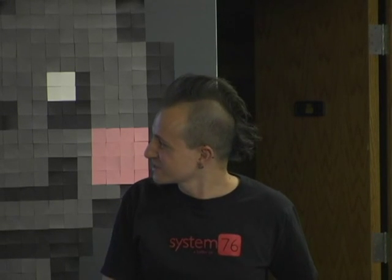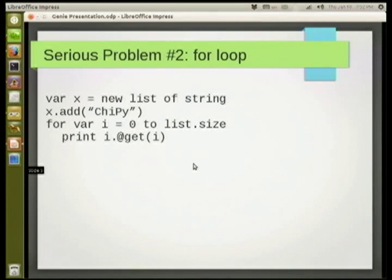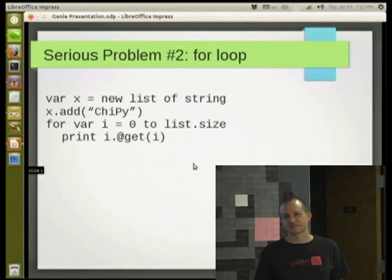Or just write it in Vala where you don't have that problem. The syntax just needs to change, maybe to also support the Vala-style syntax which uses triangular brackets like C-type languages. The second serious problem is the for loop. Here I define a list of strings, add a string, and do a for loop to go over it. The for loop is inclusive — when I do 'for loop from zero to size', it includes size itself, so it would go from zero to one for a list of one element, causing a segfault when trying to access index one.